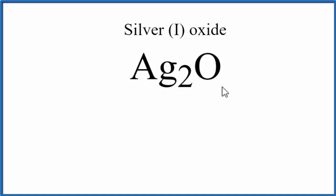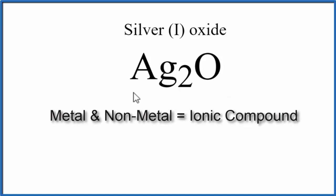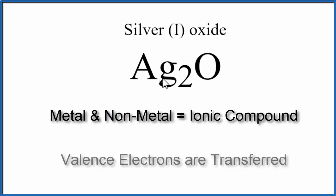Ag is a metal, and Oxygen is a non-metal. So when we have a metal and a non-metal, we have an ionic compound. That means that electrons will be transferred from the metal to the non-metal.